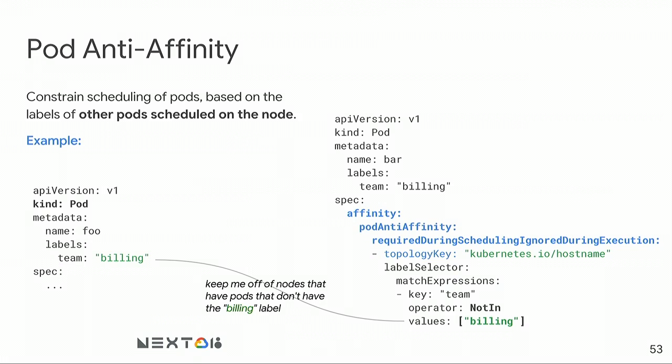One of the most useful features is pod anti-affinity, especially if you don't want to co-locate tenants on a single node — a common requirement for finance companies. Pod anti-affinity uses label-based constraints to prevent scheduling on certain nodes. In this example, I have a pod with label team=billing. Another pod specifies a pod anti-affinity rule: using the Kubernetes hostname topology key, don't place me on a node that already has a pod with the billing label. Once a pod is scheduled there, no other pod with that anti-affinity rule will be placed on that node.